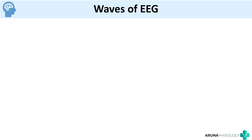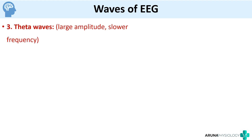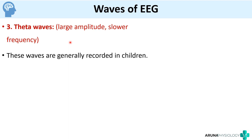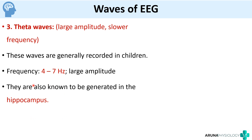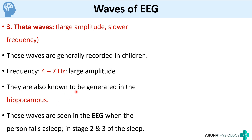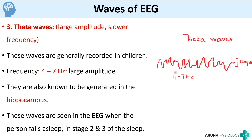Next we move on to theta waves — large amplitude, lower frequency waves. These waves are generally recorded in children and their frequency is much lesser, 4 to 7 hertz, and they are of large amplitude. They are known to be generated in the hippocampus. These are the waves in EEG when the person falls asleep, especially in stage 2 and 3 of sleep. You can see that the amplitude has increased and the frequency has decreased.